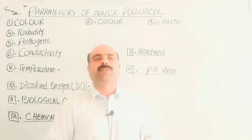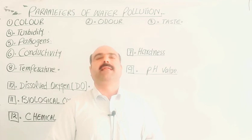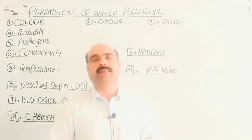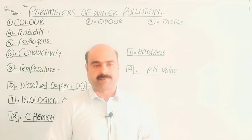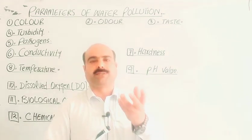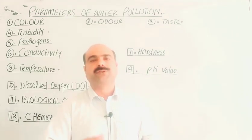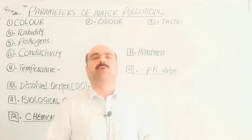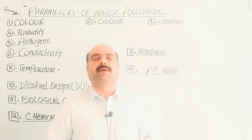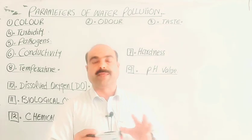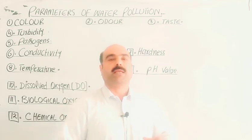Biochemical oxygen demand (BOD), or biological oxygen demand, must be less than 80 milligrams per liter. Chemical oxygen demand (COD) must be less than 150 milligrams per liter. These were the various parameters of water pollution.